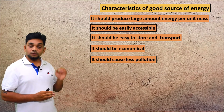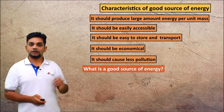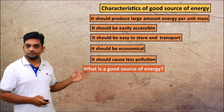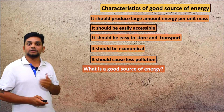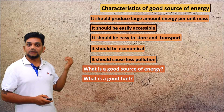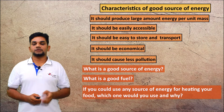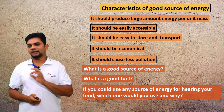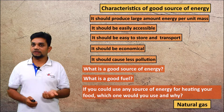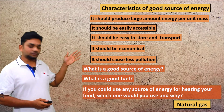If you learn these points, you can answer three questions from this session. First: what is a good source of energy? You can write all these points for this question — if the source of energy has these characteristics, then it is a good source of energy. Second: what is a good fuel? For good fuel also, you can write this same answer. Third: if you could use any source of energy for heating your food, which one would you use and why? You can select any energy — here I am writing natural gas CNG — and write all these points explaining why you are selecting that source of energy.